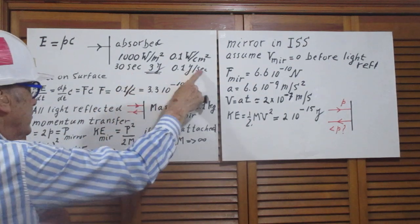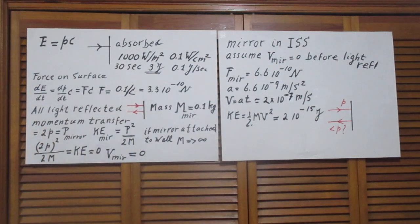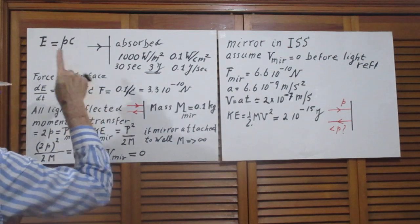A watt is a joule per second, so 0.1 joules per second hit my surface. It does it for 30 seconds, so 30 times 0.1 is 3 joules. That is straightforward and not so exciting.